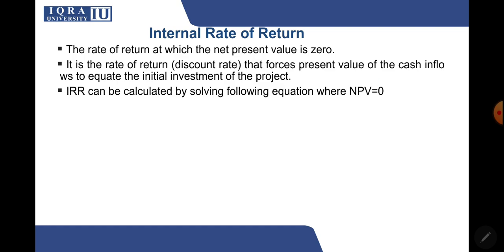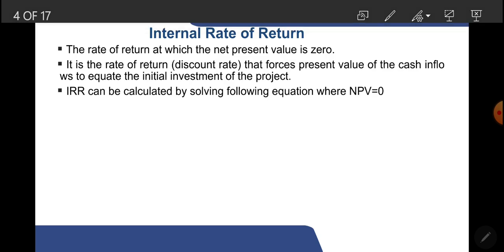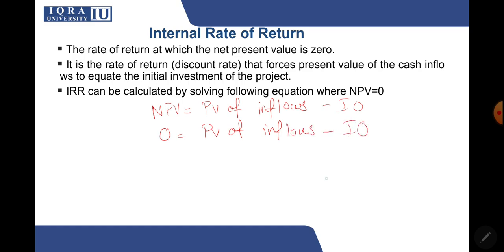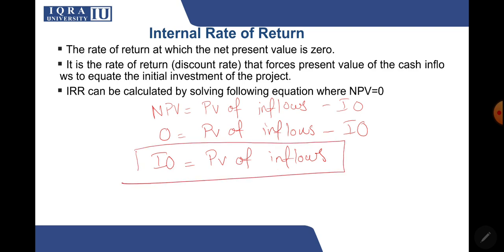IRR can be calculated by solving the equation where NPV is zero. NPV equals present value of inflows minus initial outlay. When NPV is zero, the initial outlay equals the present value of inflows. So basically you need to find that rate where the present value of inflows equals your initial investment.